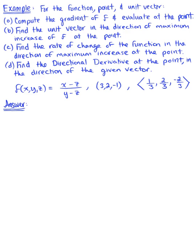For the following function, point, and unit vector: compute the gradient of the function and evaluate at the point; find the unit vector in the direction of maximum increase of the function at the given point; find the rate of change of the function in the direction of maximum increase at the point; and find the directional derivative at the given point in the direction of the given vector.